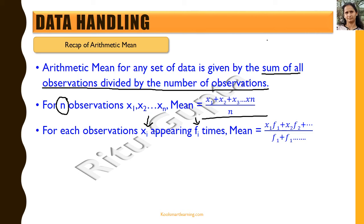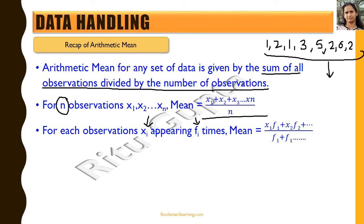Say, for example, we have this set of observations written here. To calculate the mean of this kind of observation set, we will take the sum of all of these, which would be 1 plus 2 plus 1 plus 3 plus 5 plus 2 plus 6, and then divide it by the total number of observations, which is 8 in this case.